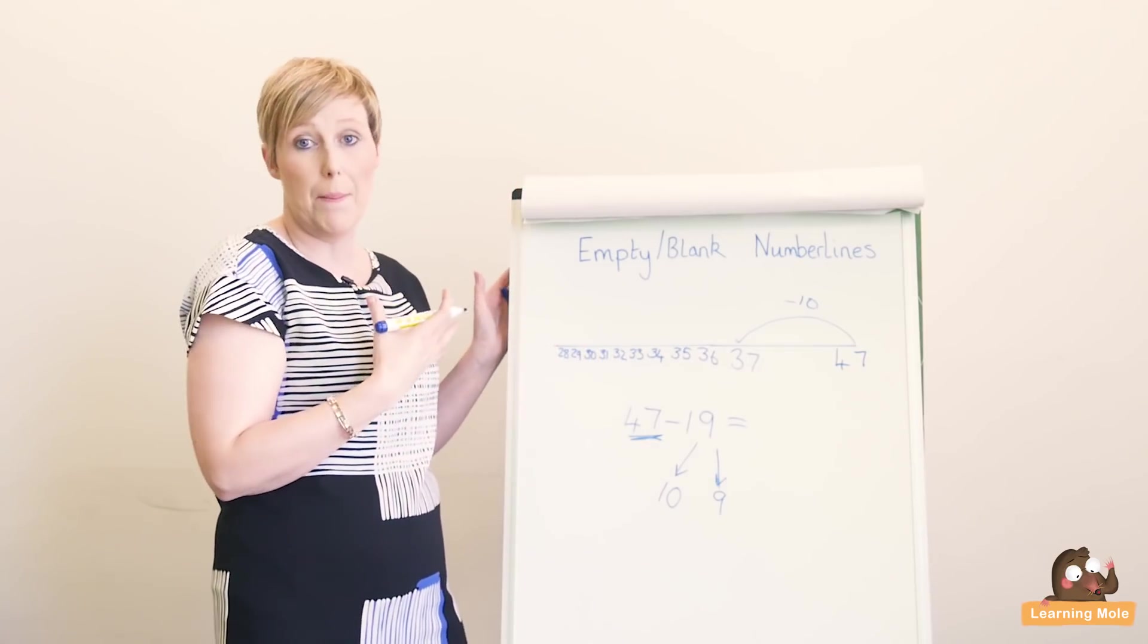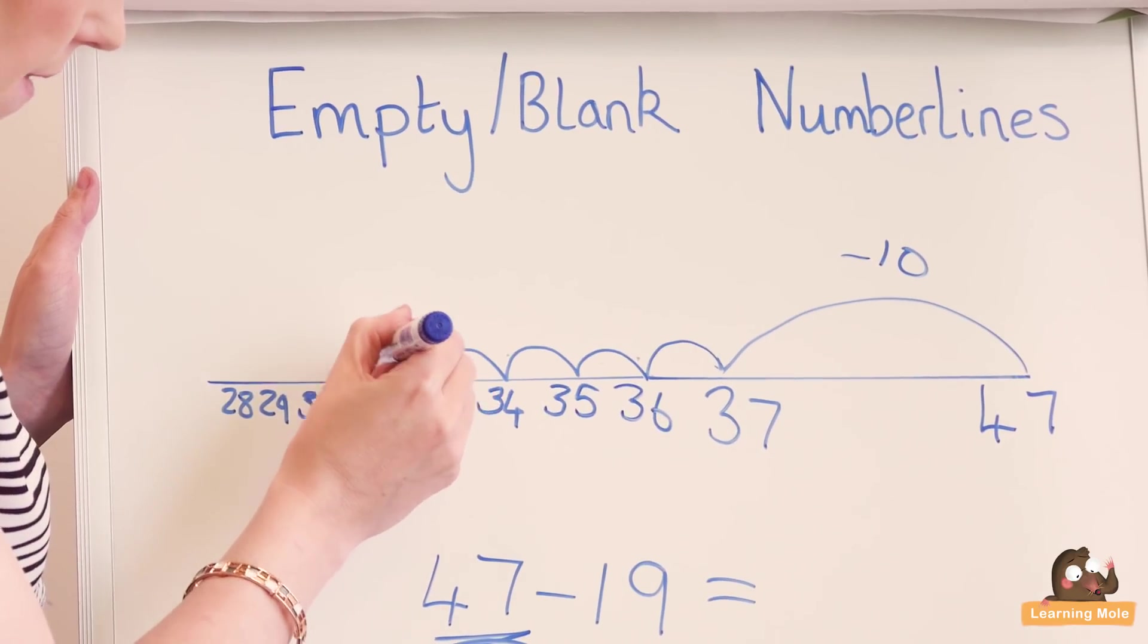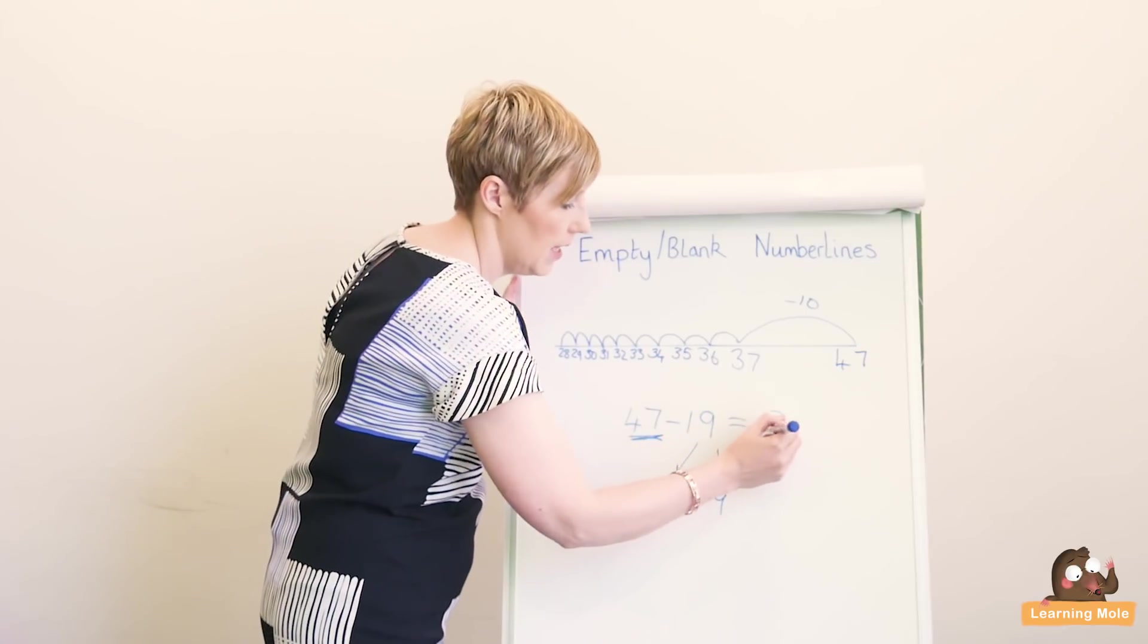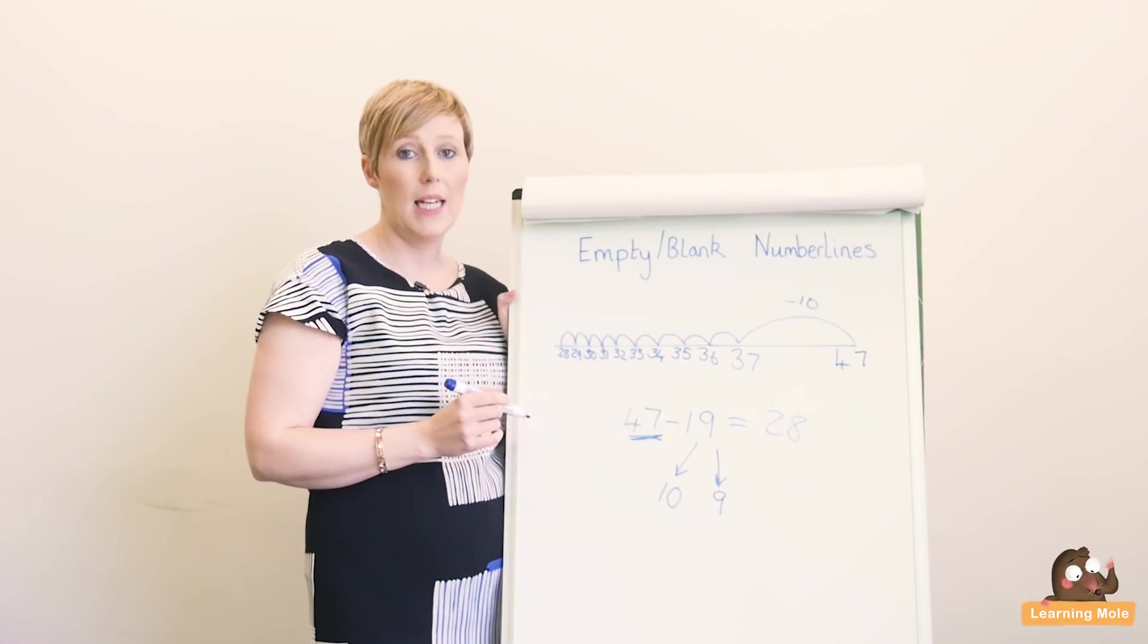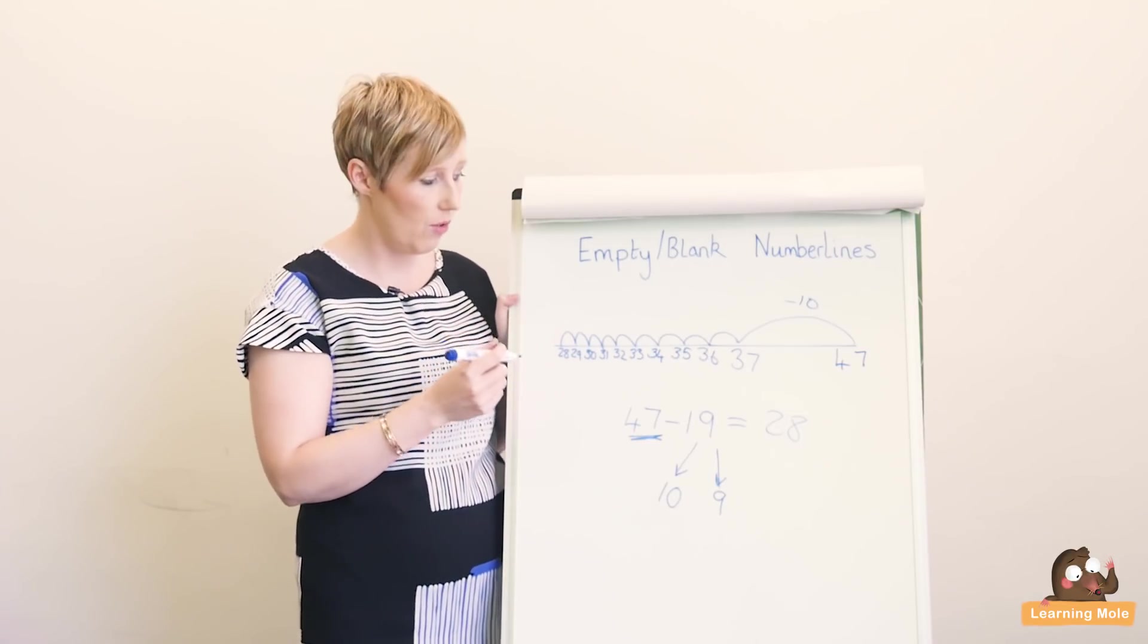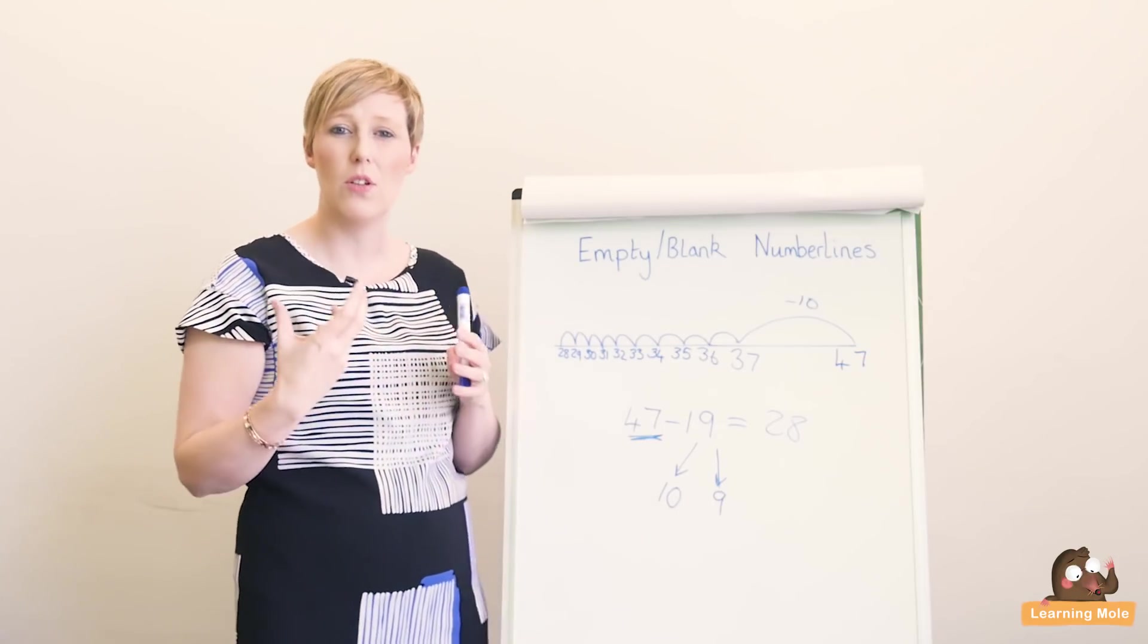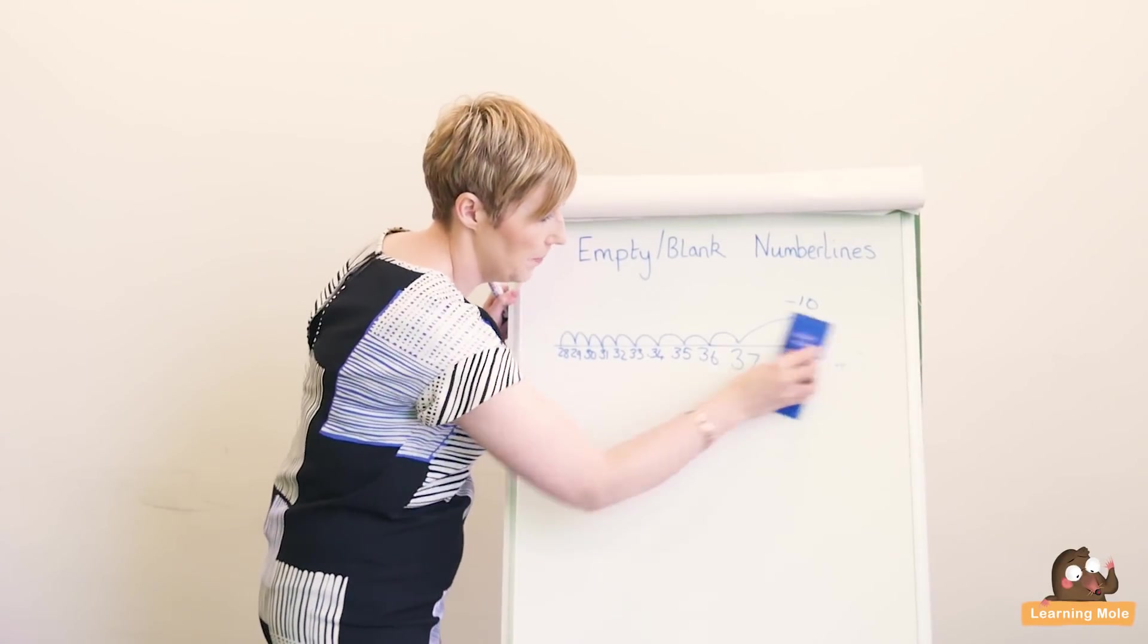So then you're going to jump back nine: one, two, three, four, five, six, seven, eight, nine, and you got to your answer 28. Your child may also tell you here that actually I could jump back 10 and add one back on. That's brilliant because they're really starting to think mentally and actually putting that into practice, which is great. But I'm just going to do another one of these for you because they can be really quite tricky, especially if you've not done it before with your child. Let me just talk you through one more just to give you an idea. I'm just going to draw a rough number line here because you don't always have a ruler at hand.